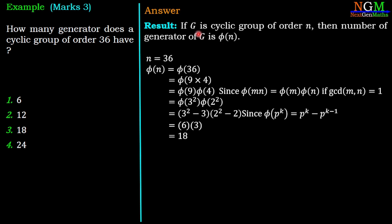18 is the number of generators of a cyclic group of order 36, and which is option number 3.